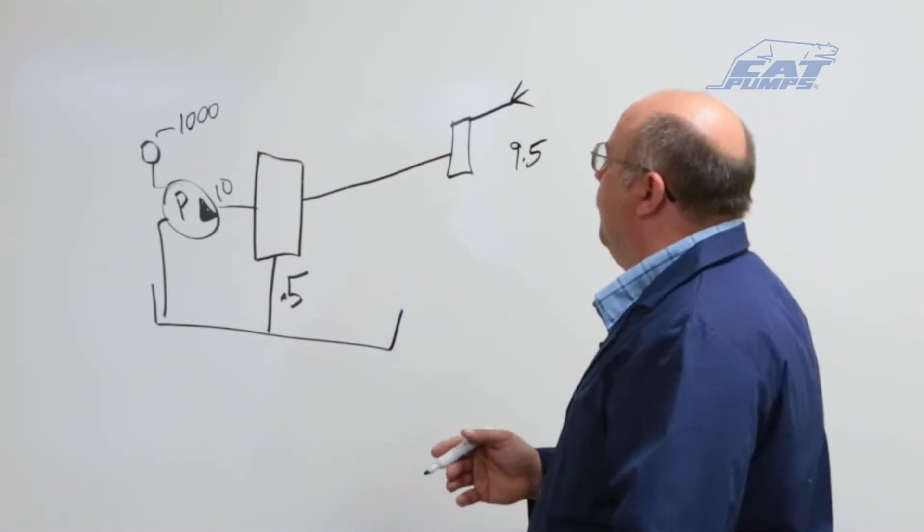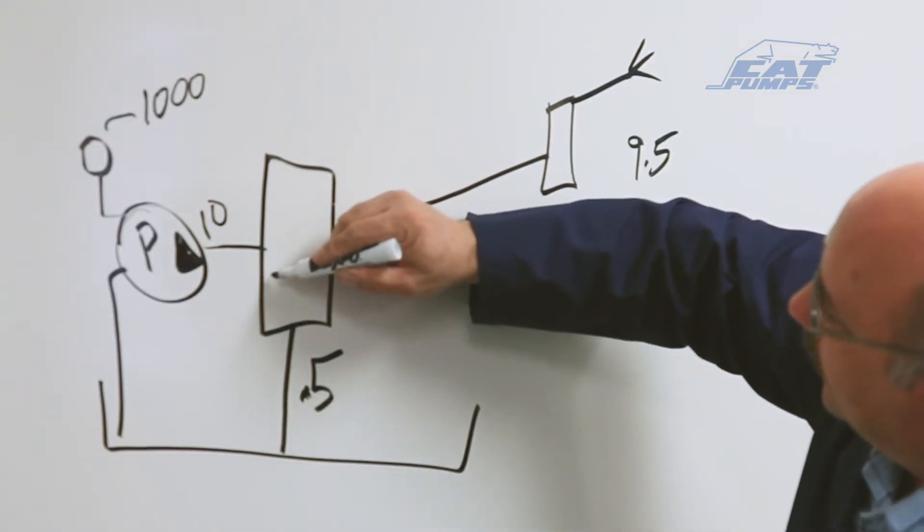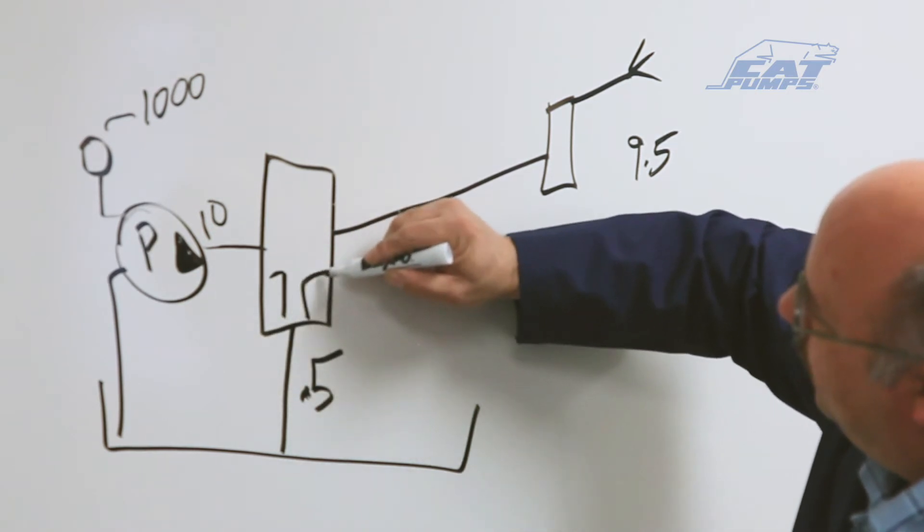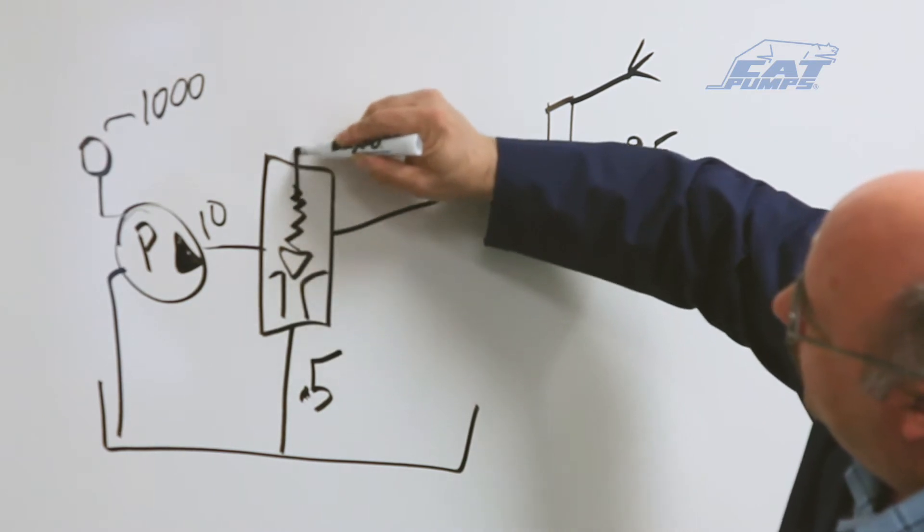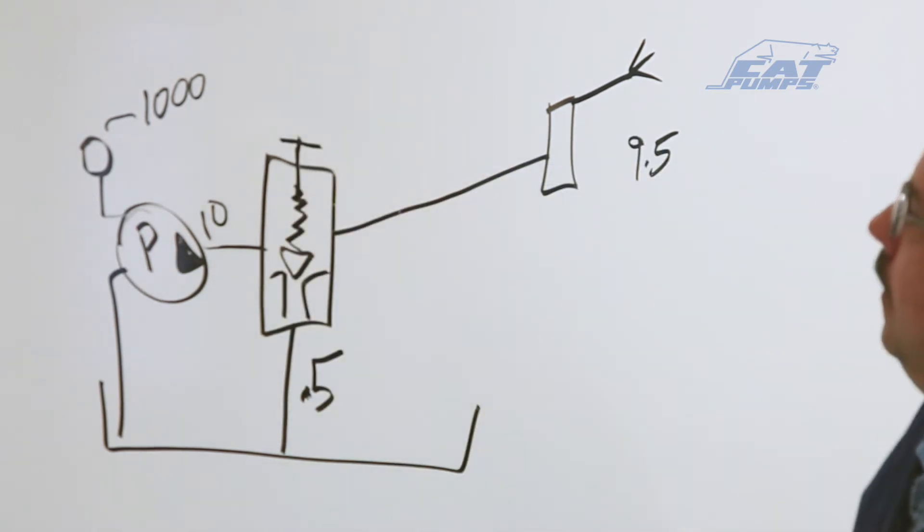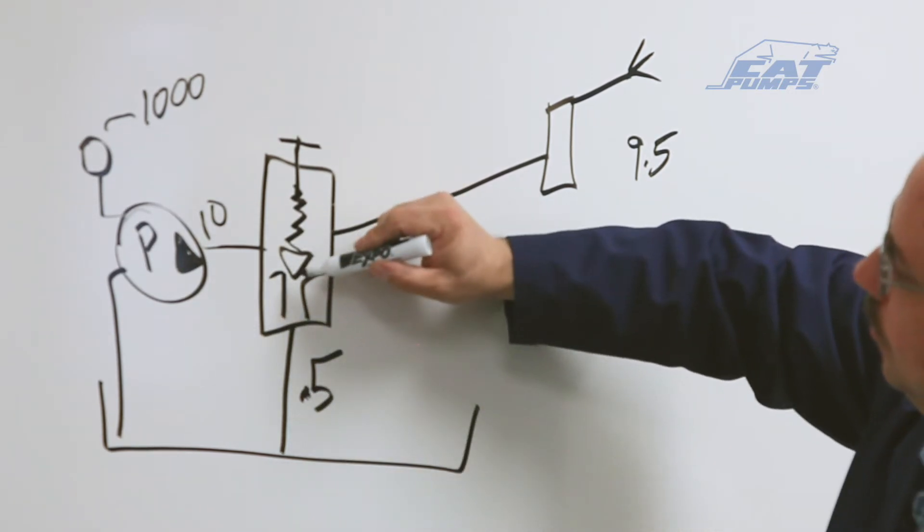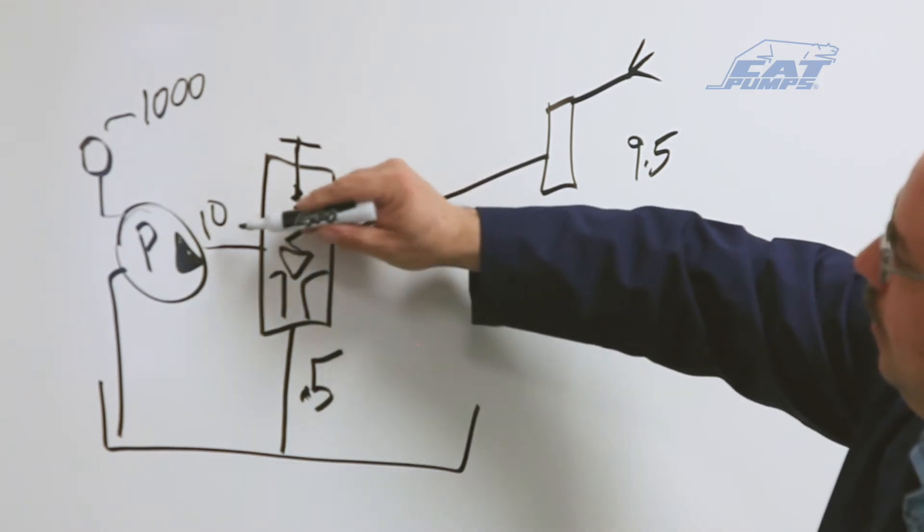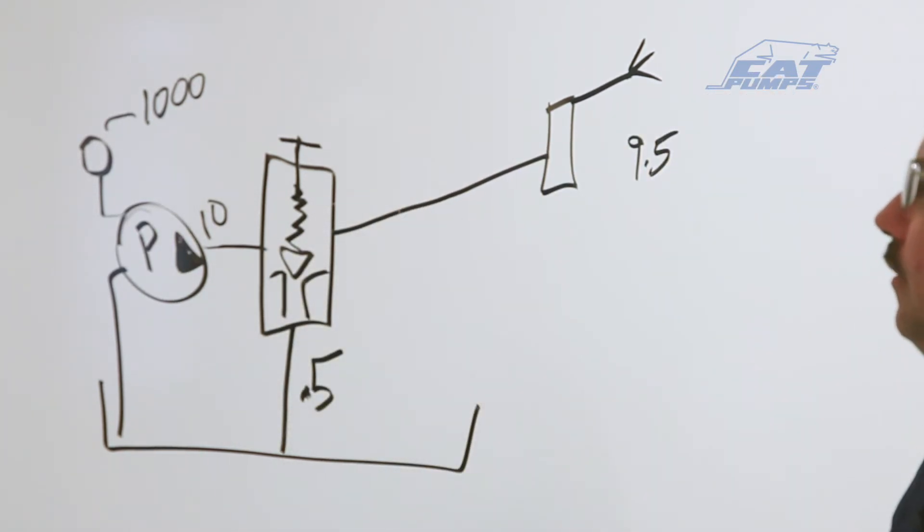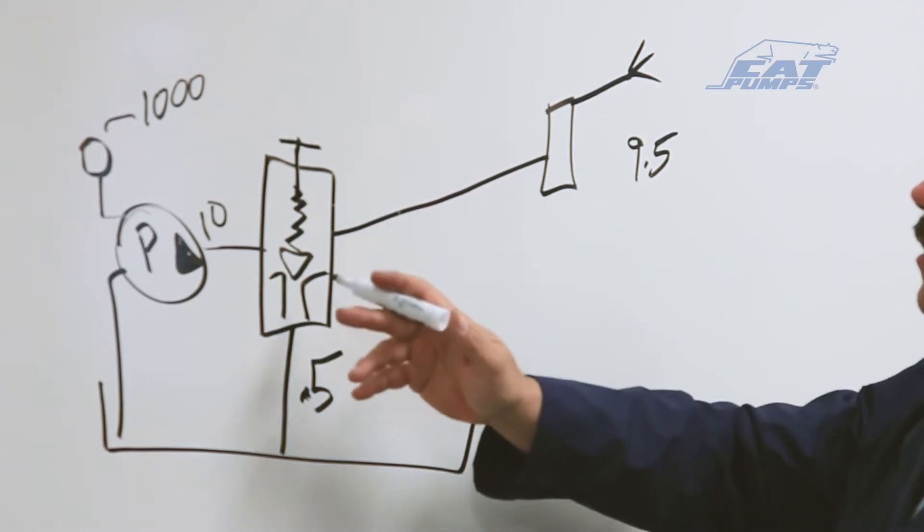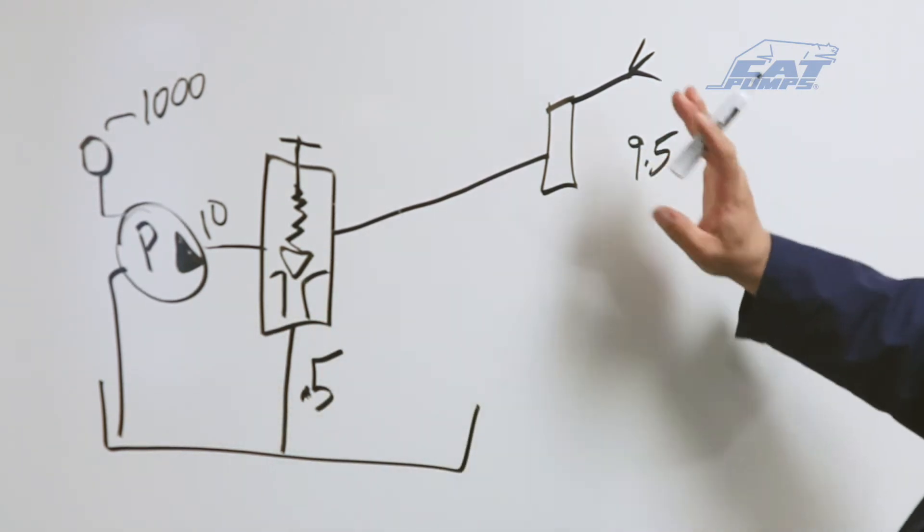What can happen though is inside the regulator, what's going on is you'll have a seat in here, a poppet with a spring that's adjustable. And when you adjust this adjustment, what it does is it's closing this poppet against the seat to put a small restriction here so that most of the flow goes out the wand and very little goes down to your bypass. And when this is running, you can tell that this would be a very small area because most of your flow is coming out here.